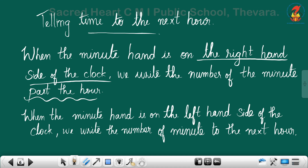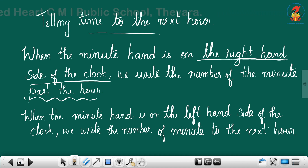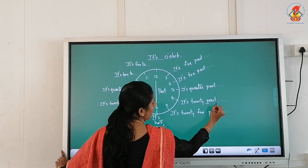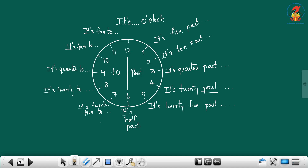When the minute hand is on the left-hand side of the clock, we write the number of minutes to the next hour. When the minute hand is on the left-hand side, we can say it is twenty-five to the next hour, using 'to'.